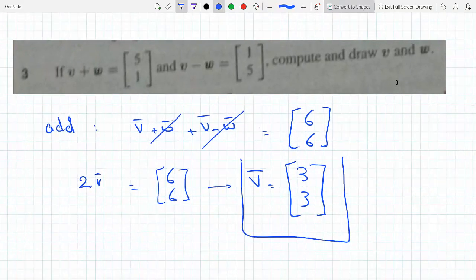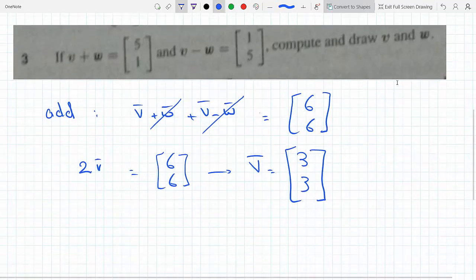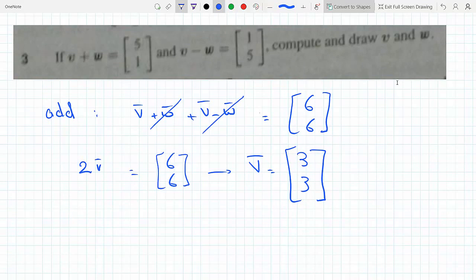So this is the first, and then just plug it in one of them. So w would be [5,1] minus v, which is minus [3,3]. So that means w would equal to 1 minus 3, we would subtract the corresponding components, minus 2.